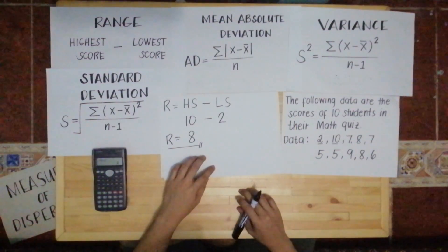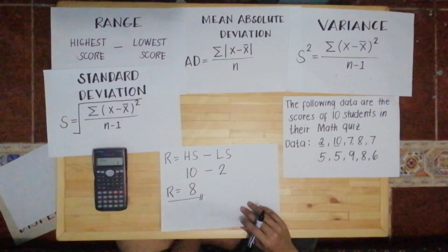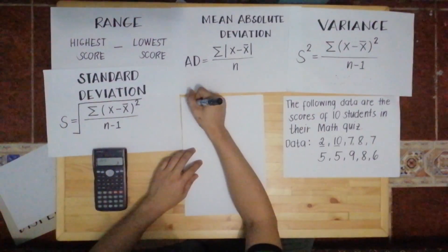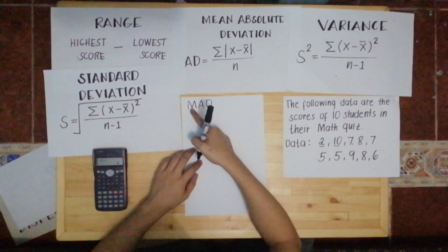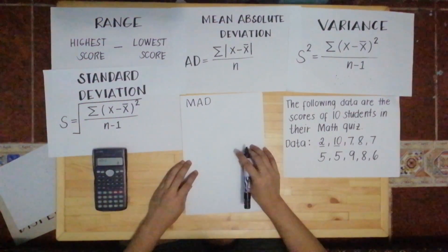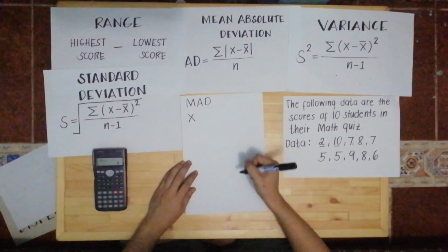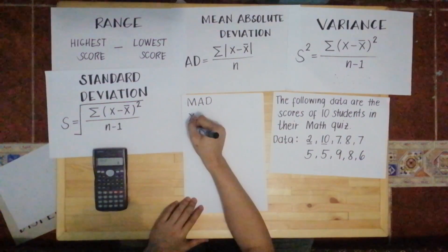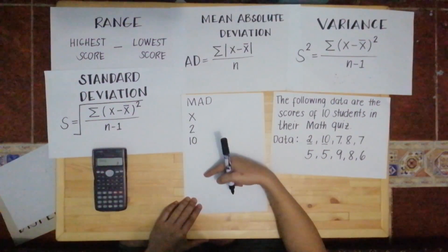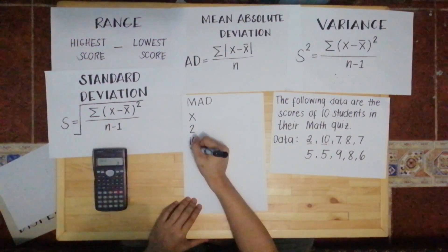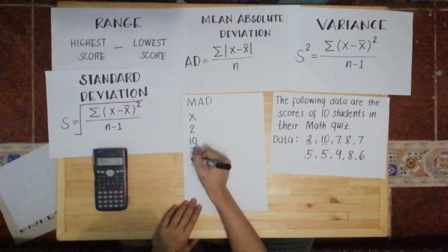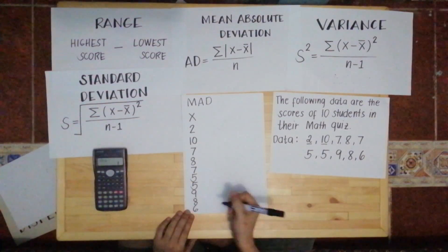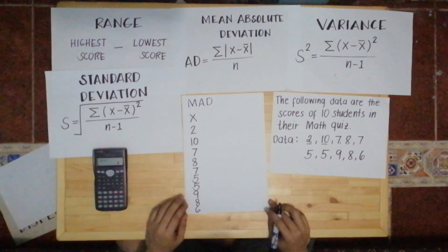Next, how are we going to get the mean absolute deviation? For the MAD or AD, mean absolute deviation, we need to create a table so you can see the process. So the first column is X, which is the score. How many scores do we have? We have 10 scores. So let's list down the scores: we have 2, 10, 7, 8, 7, 5, 5, 9, 8, and 6. We don't need to arrange the scores from lowest to highest.